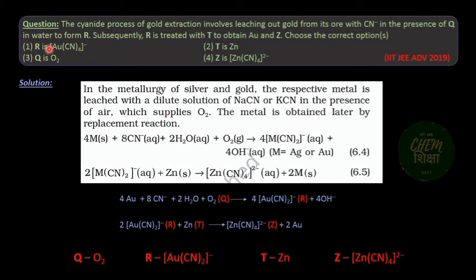Here option 1 states R is tetra-cyano aurate 3- complex which is incorrect, while options 2, 3, and 4 are correct. Thank you.